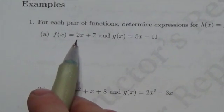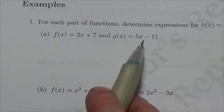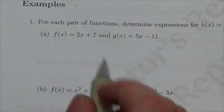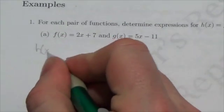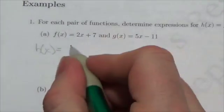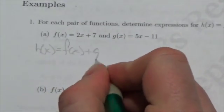Given that the two functions we're working with are 2x + 7 and 5x - 11. The first expression we're going to work with is f(x) + g(x).